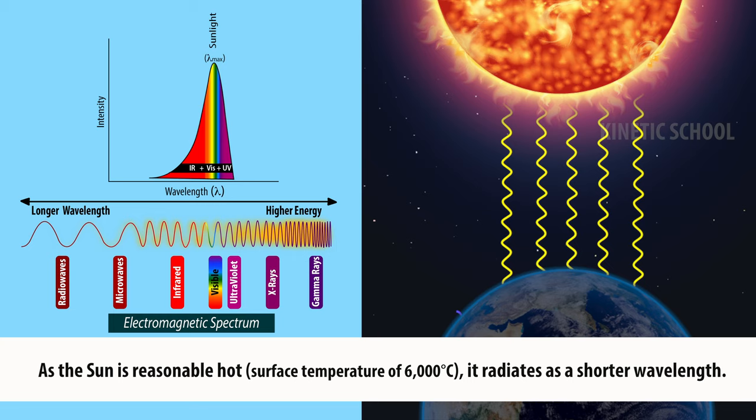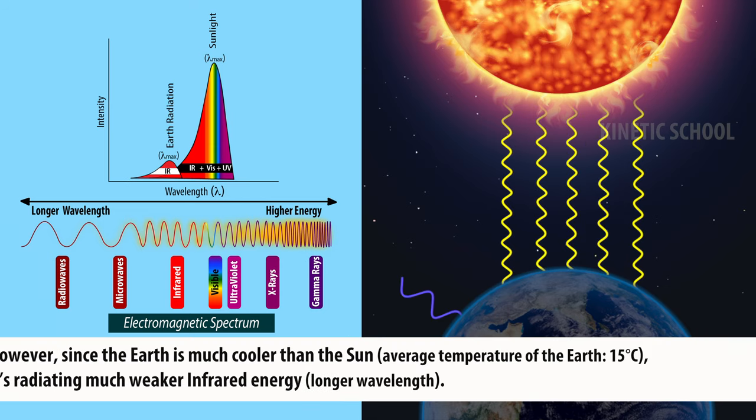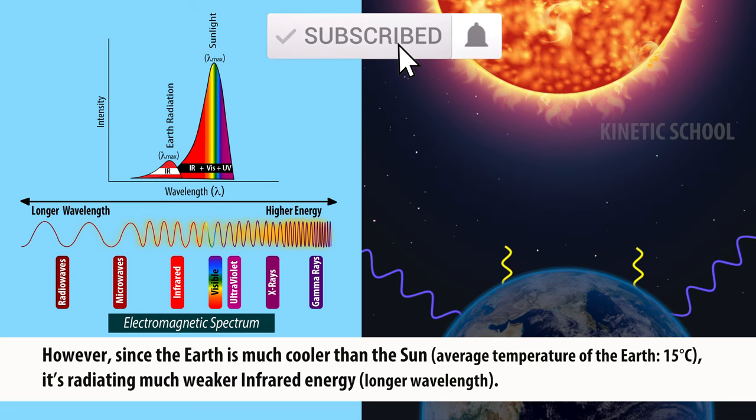As the sun is reasonably hot, it radiates as a shorter wavelength. However, since the earth is much cooler than the sun, it's radiating much weaker infrared energy.